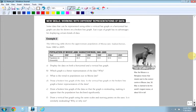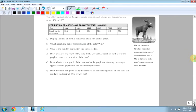So new skills working with different representations of data. Some data can be represented using either a vertical bar graph or a horizontal bar graph, and it could also use a broken line graph. So we have three: your vertical bar graph, horizontal bar graph, and the broken line graph. Here we have some data. Table shows approximate populations of Moose Jaw, Saskatchewan from 1980 to 2005. So we have all this data, 33.5, 34.3. And it wants you to display the data on both the horizontal and vertical bar graph. Both, two different graphs.